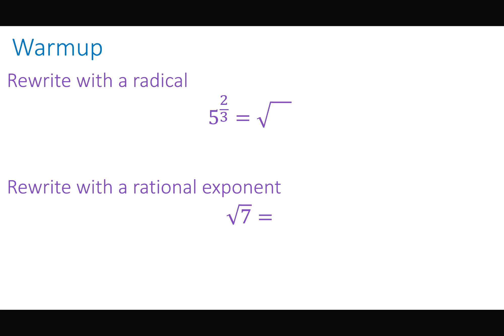For a quick warm-up, recall how we rewrite exponential functions as radicals and vice versa. For five raised to the two-thirds, the denominator goes in the index position — that's the cube root of 5 squared, or the cube root of 25. Going the other way, the square root of seven can be rewritten as seven raised to the one-half power.